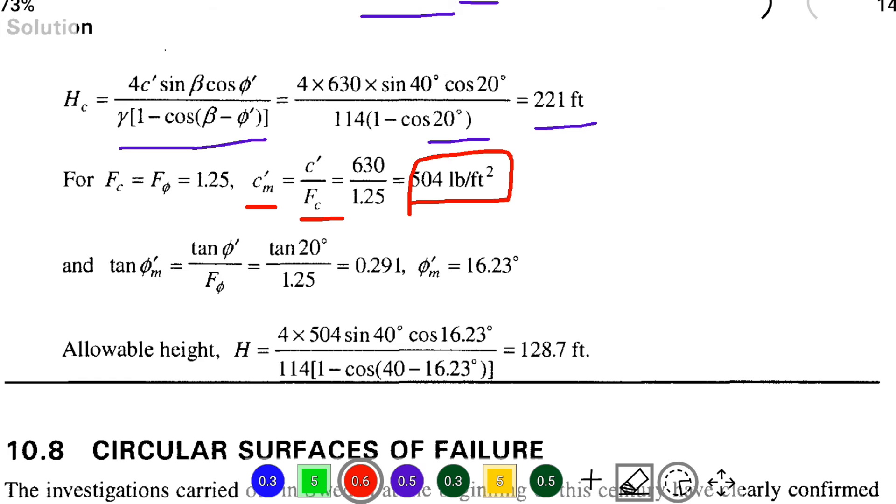That is the mobilized cohesion. We know the formula tan φ_m equals tan φ divided by F_φ, so tan φ equals tan 20 degrees divided by F_φ equals 1.25.